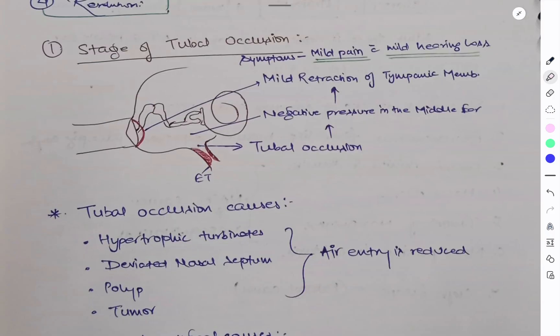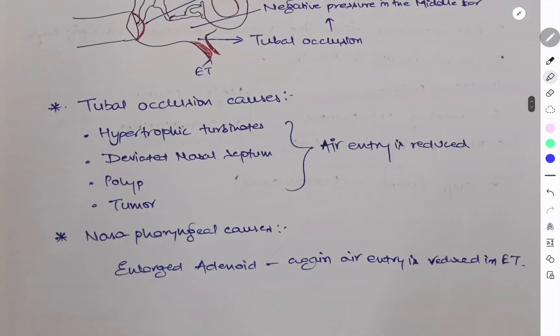Coming to how the disease progresses step by step, we will see here. So stage one, that is stage of tubal occlusion - what happens here is Eustachian tube obstruction leading to negative pressure in the middle ear, and when this increases it causes mild retraction of tympanic membrane. So what symptoms will it cause? It will cause only mild pain with mild hearing loss. So what are the causes of tubal occlusion here? Hypertrophic turbinates, deviated nasal septum, polyp and tumor. Nasopharyngeal causes are enlarged adenoids.